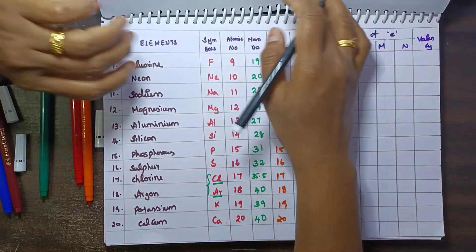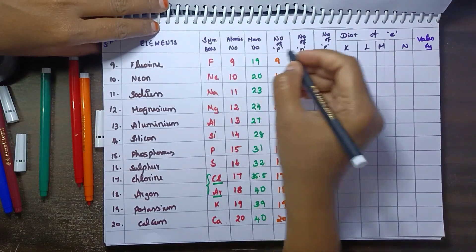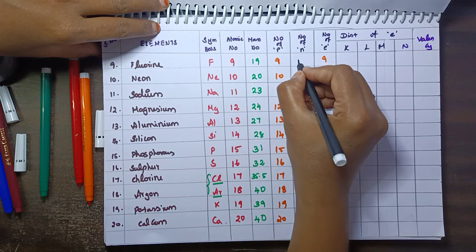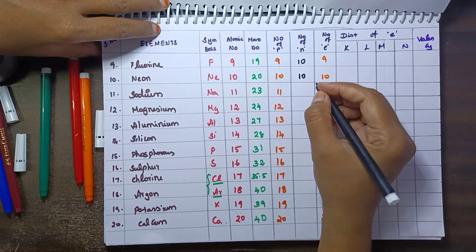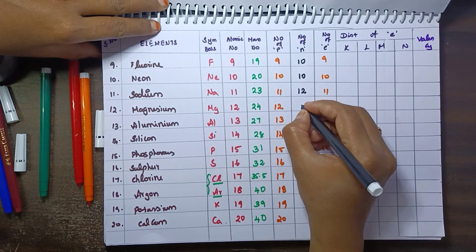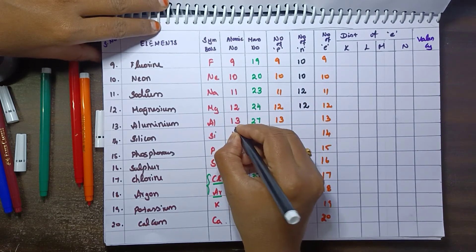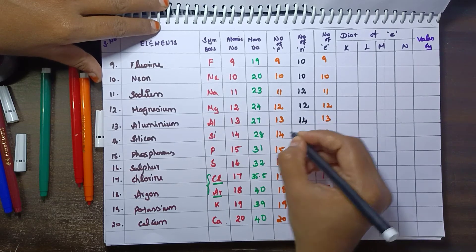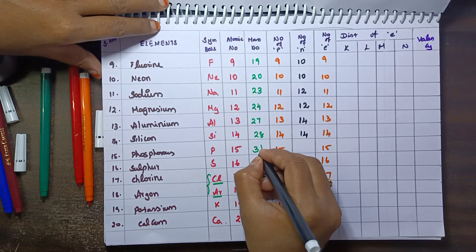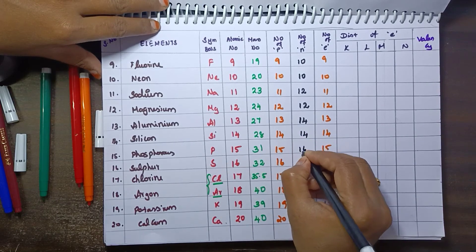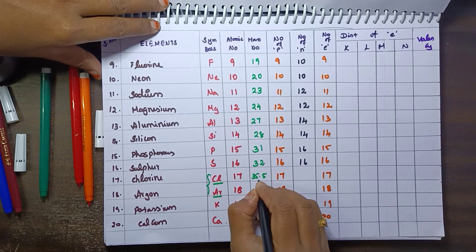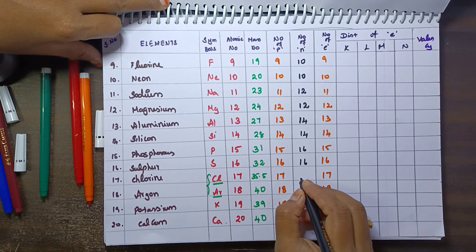Okay next, so 19 minus 9, that equals 10. 20 minus 10 equals 10. 23 minus 11 equals 12. 24 minus 12 equals 12. 27 minus 13 equals 14. 28 minus 14 equals 14. 31 minus 15 equals 16. 32 minus 16 equals 16.